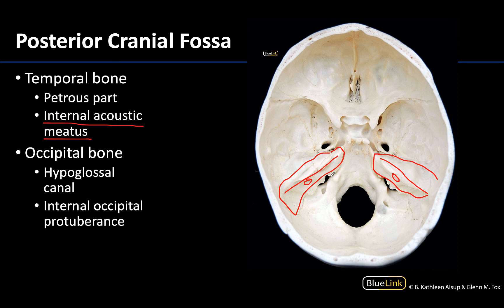Moving along, there's the jugular foramen that we have talked about before — that's going to be right about here. Your hypoglossal canals are going to be right in this region. As mentioned, I always try to find the foramen magnum and then head towards the basilar part of the occipital bone and it'll be kind of hiding out right in there — that will allow cranial nerve 12 or your hypoglossal nerve to exit. These are some of the foramina of the cranial fossae and the boundaries associated with them. If any questions come up, feel free to reach out. Have a wonderful rest of your day.